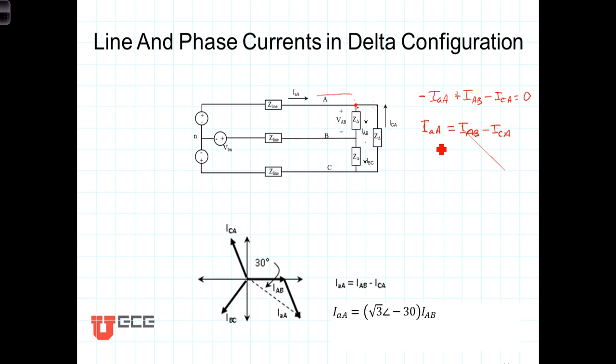Once again, let's look at the phasor diagram to understand what is happening with these currents. So here is I sub AB, here is I sub BC that lags I sub AB by 120 degrees, and here's I sub CA, which is leading I sub AB by 120 degrees.